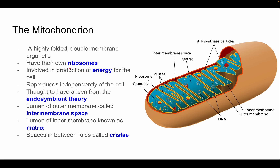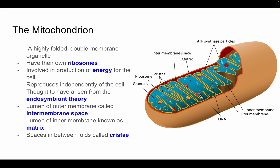The mitochondrion is a highly folded double-membrane organelle. It has its own ribosomes, is involved primarily in energy production for the cell, and reproduces independently of the cell. It's thought to have arisen from the endosymbiont theory. The lumen of the outer membrane is called the inner membrane space; the lumen of the inner membrane is the mitochondrial matrix; and the spaces between the folds are called cristae. Its ribosomes are not identical to eukaryotic ribosomes.